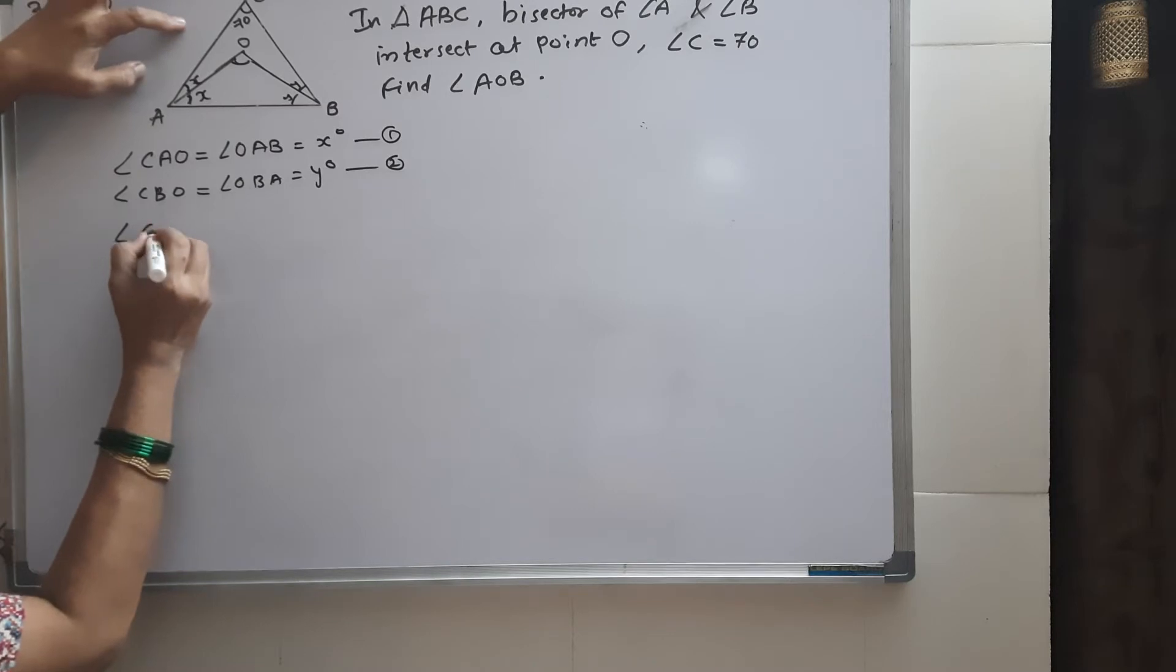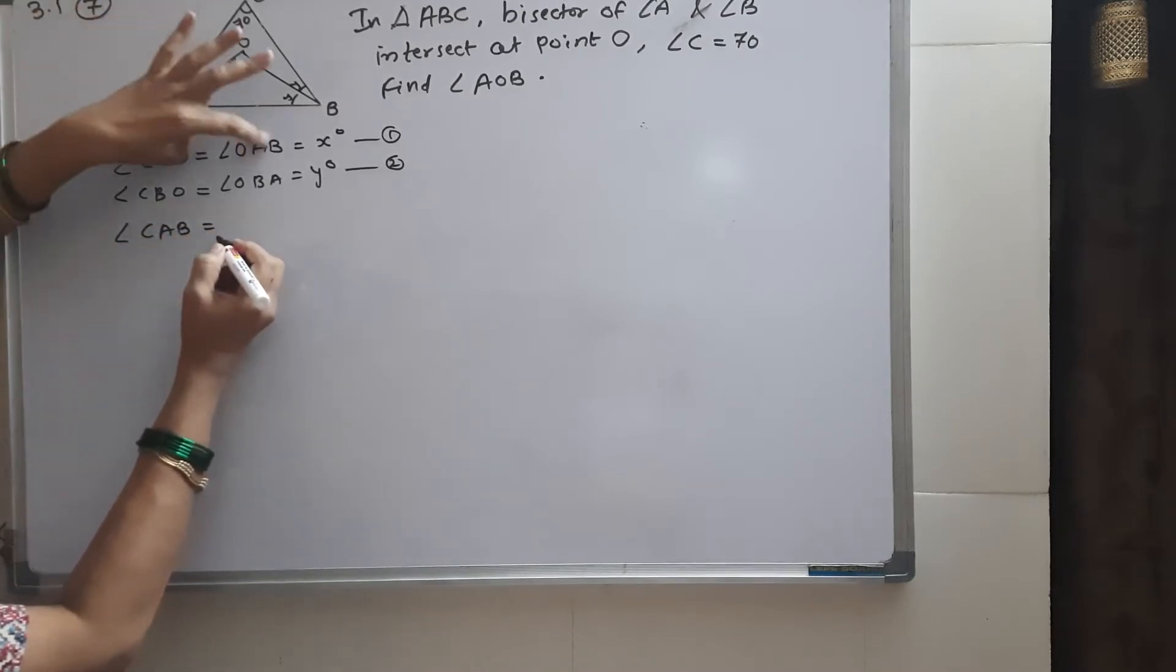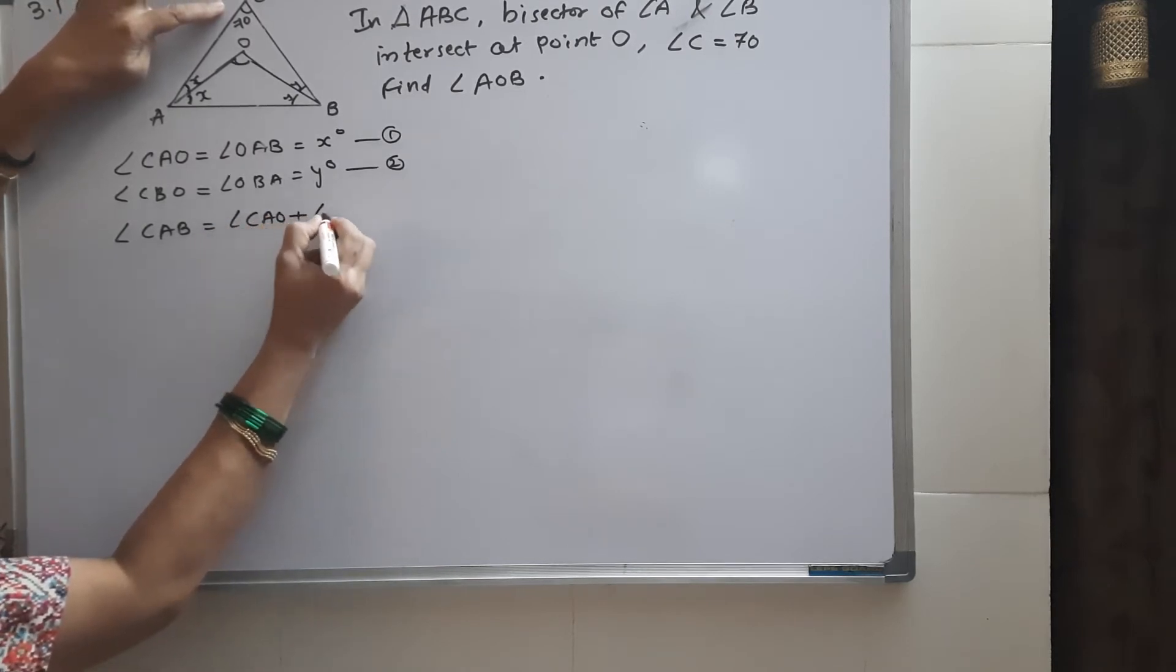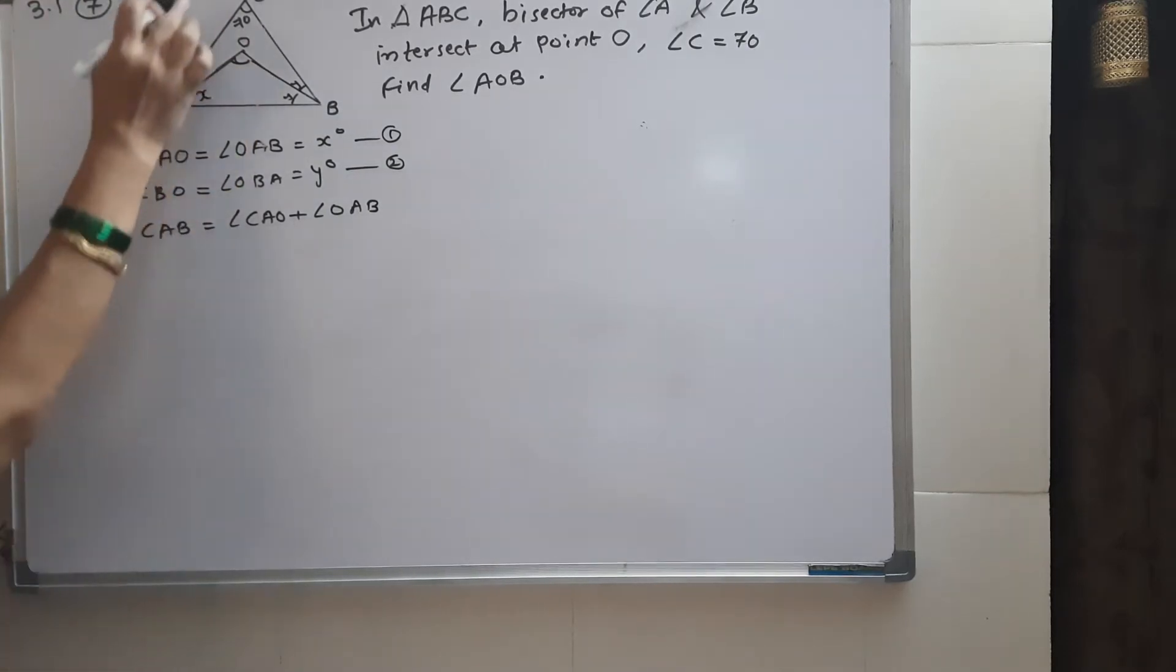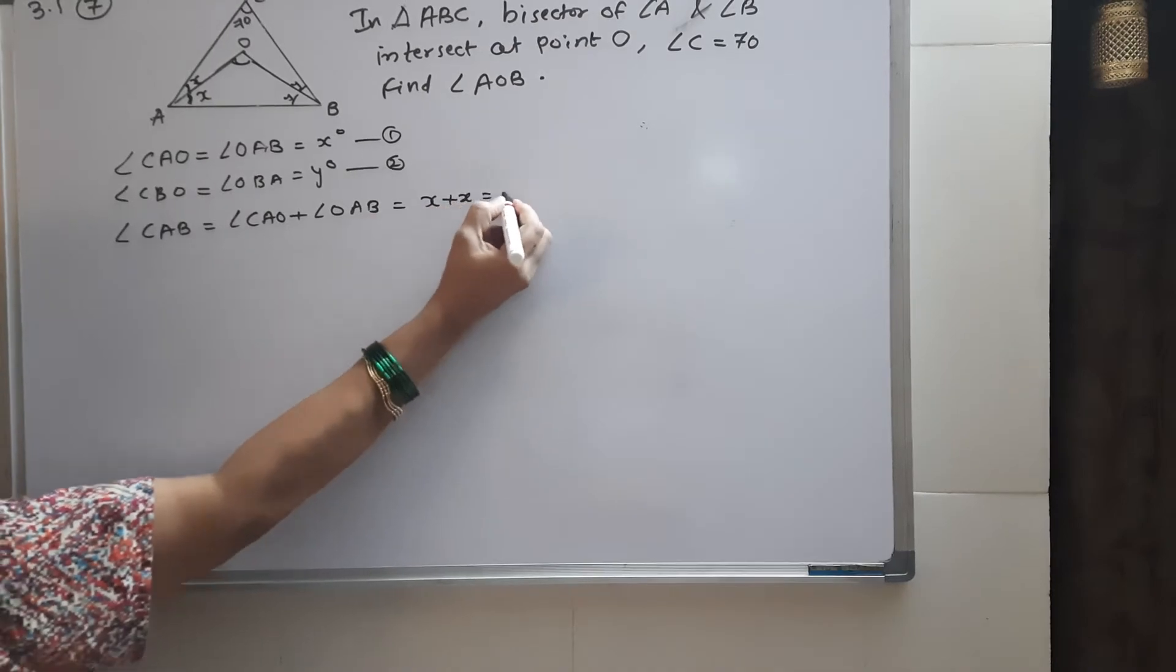What is angle CAB? Angle CAO plus angle OAB equals angle CAB. This means X plus X, which equals 2X.